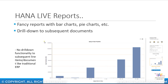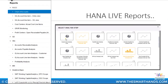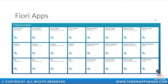You cannot simply double-click and go to the actual line item document. However, the main purpose of these reports is to view data in graphs and charts. There are many different types of pie charts, scatter graphs, and line graphs available in the HANA Live reports. On the left-hand side you can see reporting options for many different modules, all pre-built and continuously updated with each new S4HANA release.